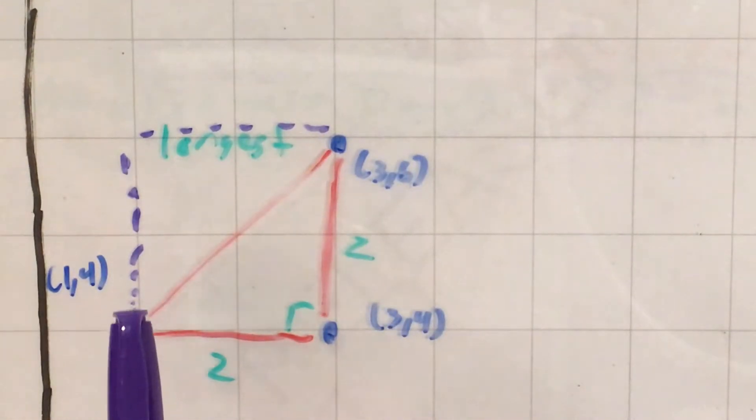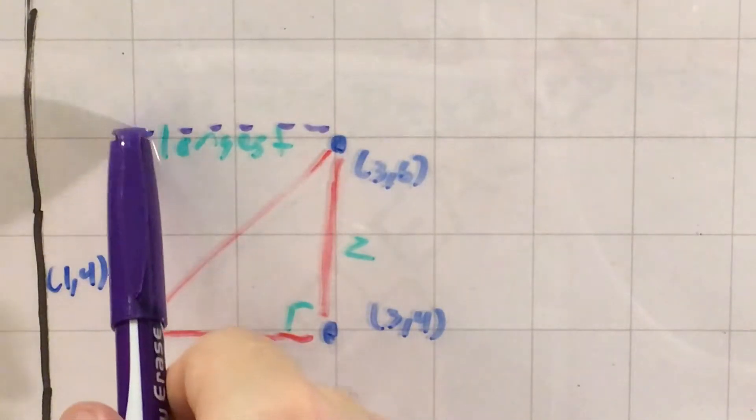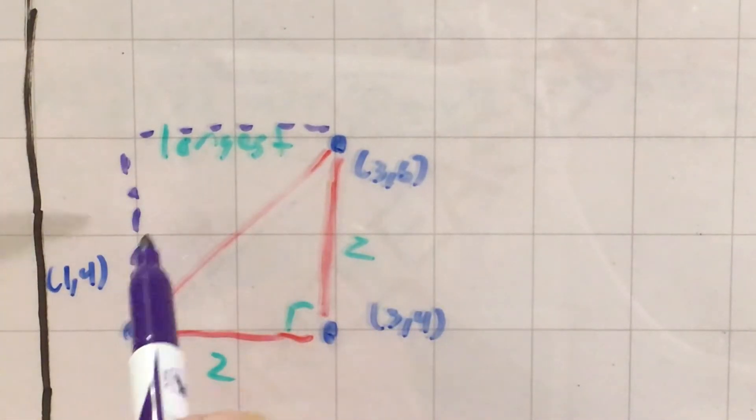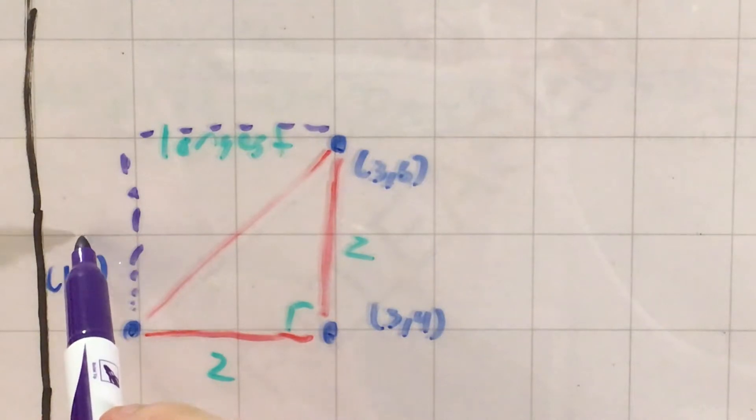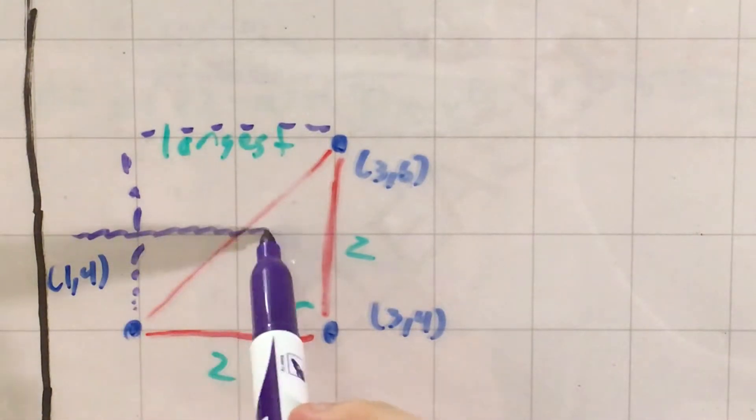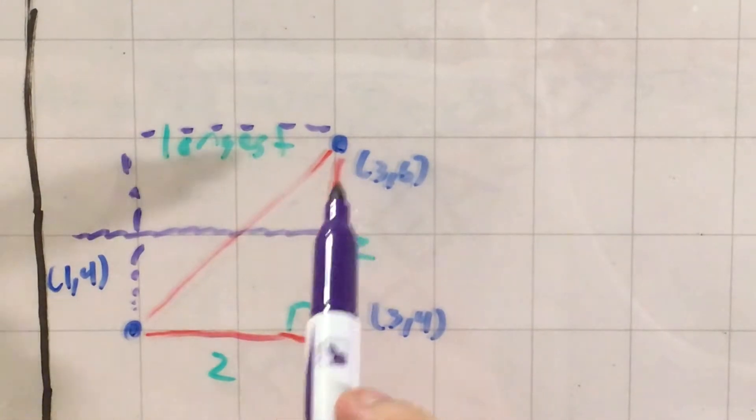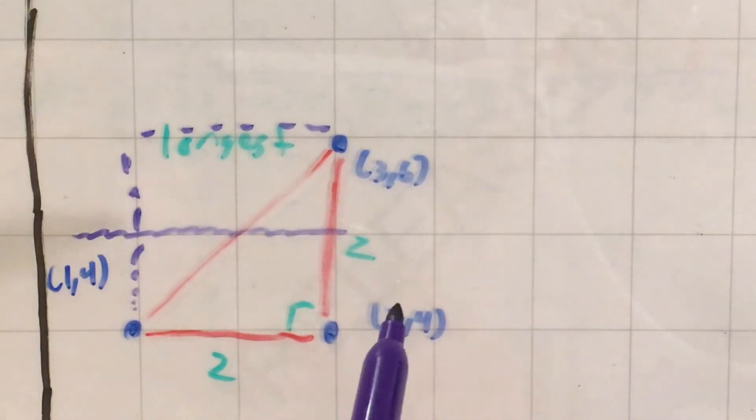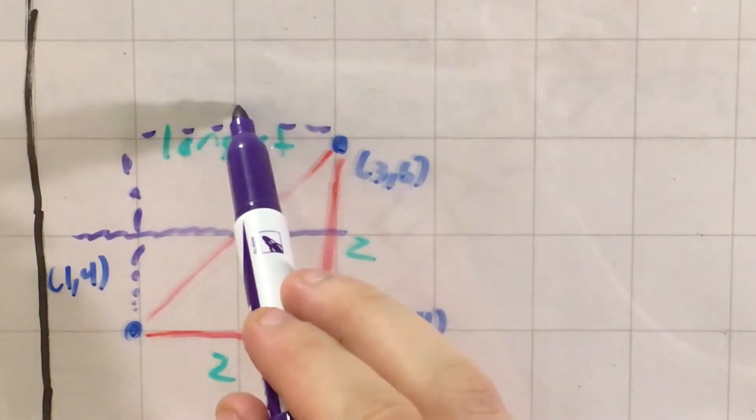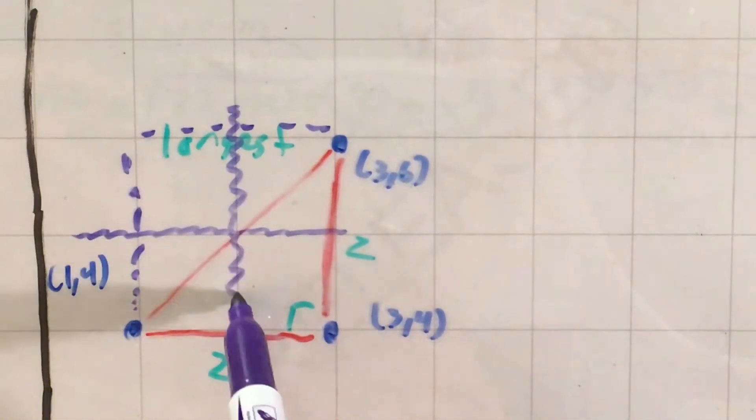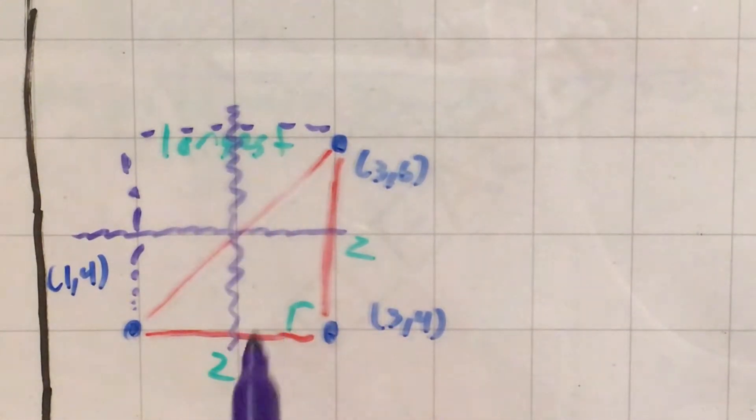So if from this point to this point I go two squares up, then that means that the middle of that two squares would be just one square. And now, if from this point to this point, I went two squares to the right, the middle line there, so to speak, would be just one square right in between them.